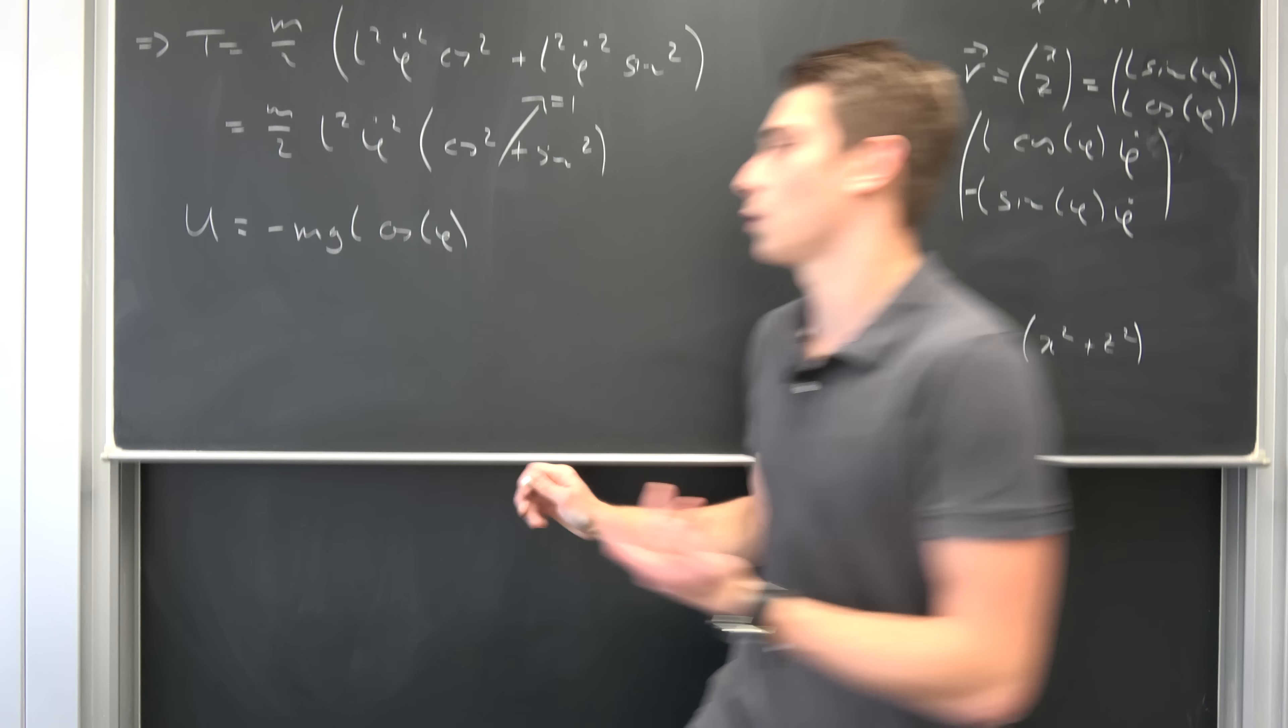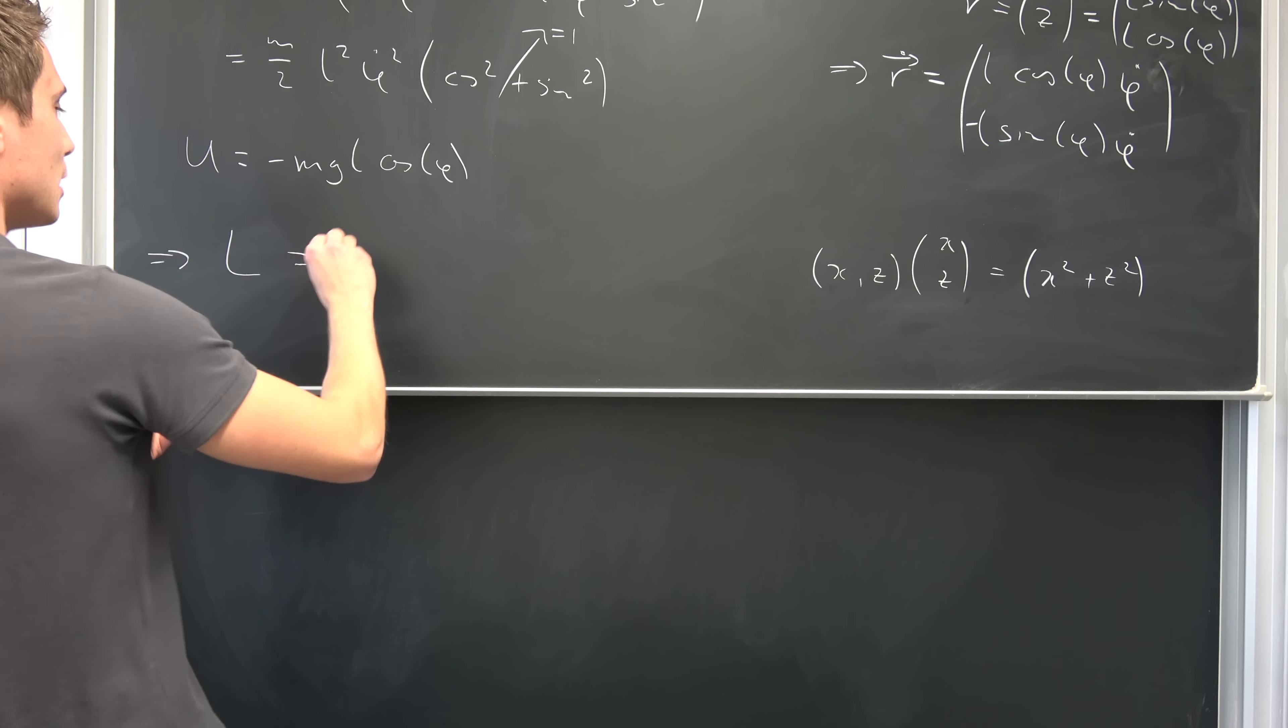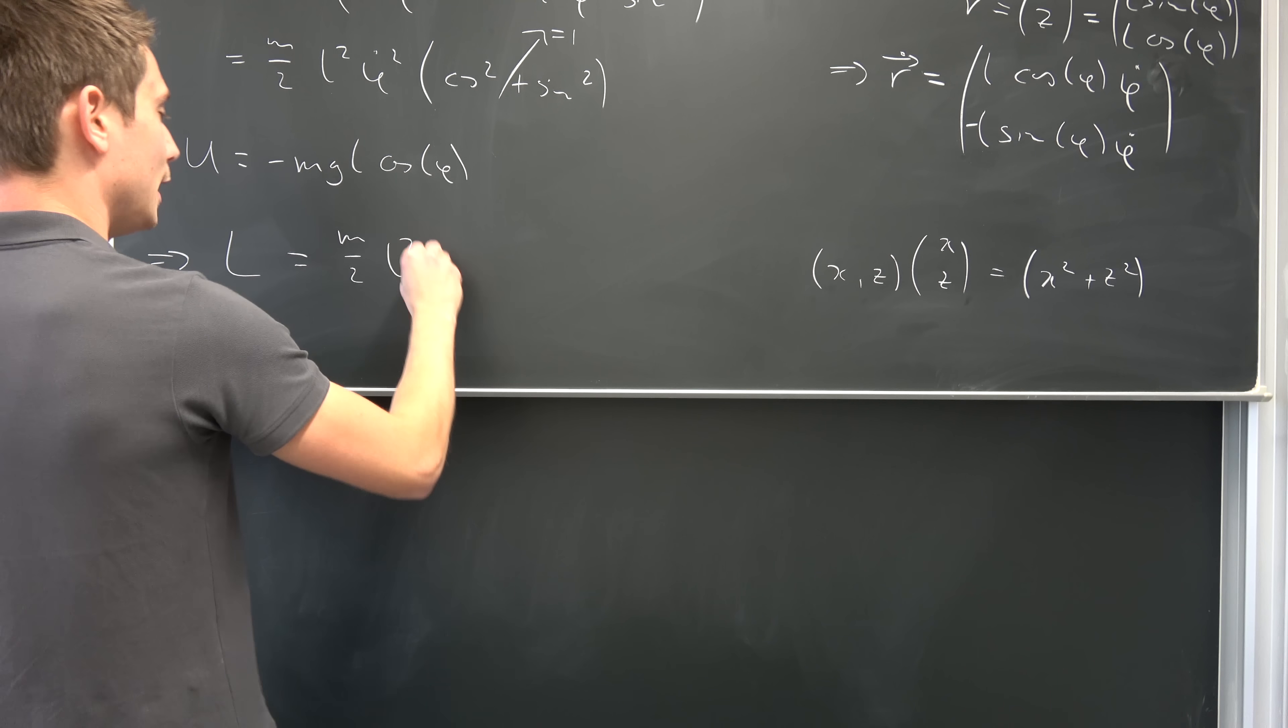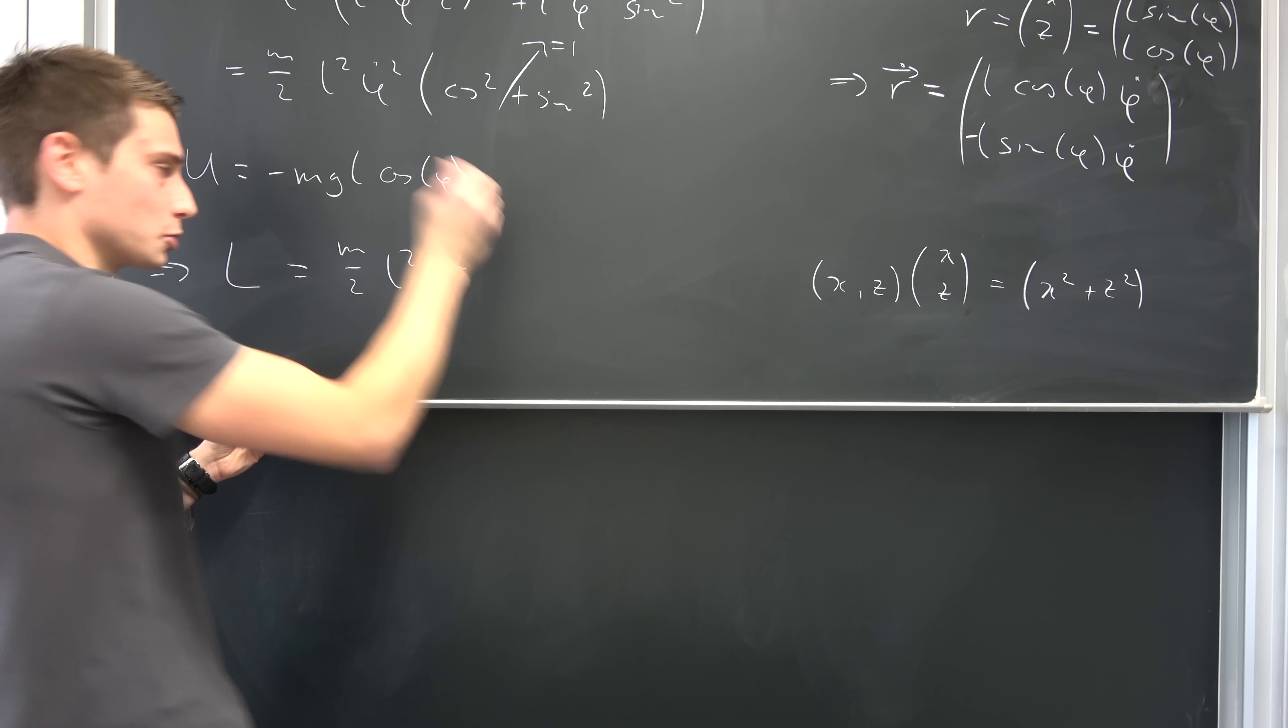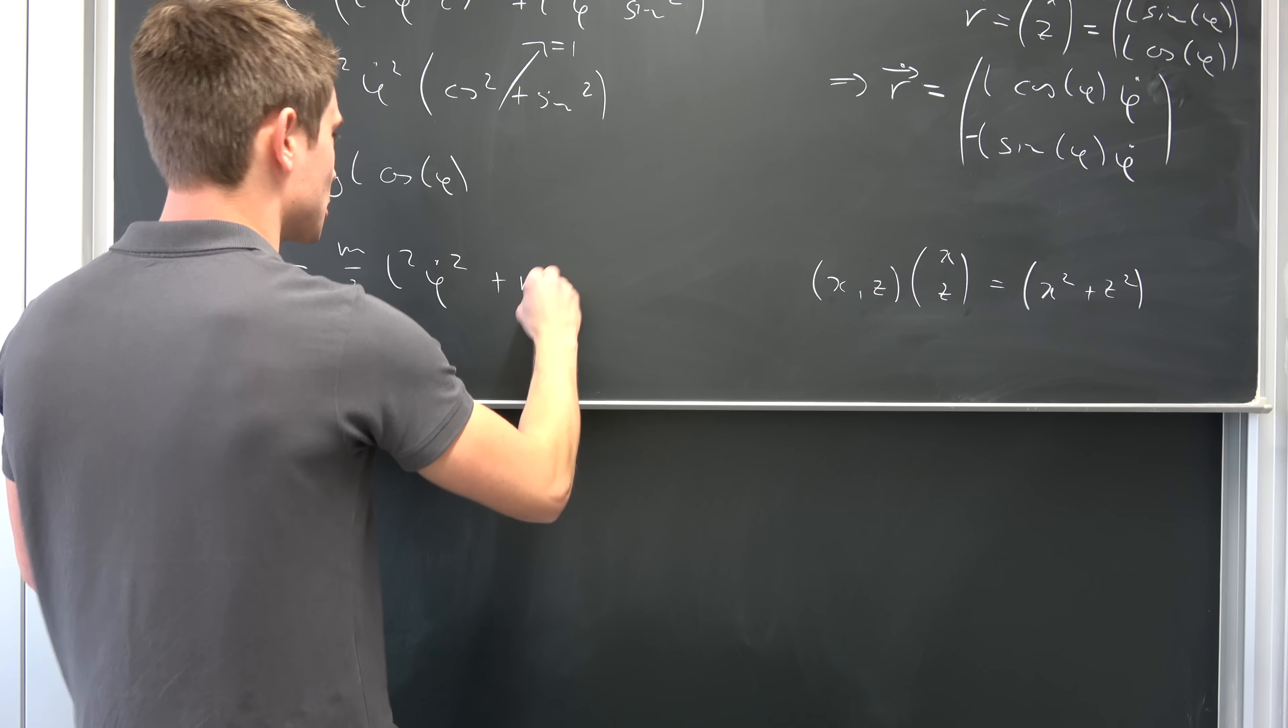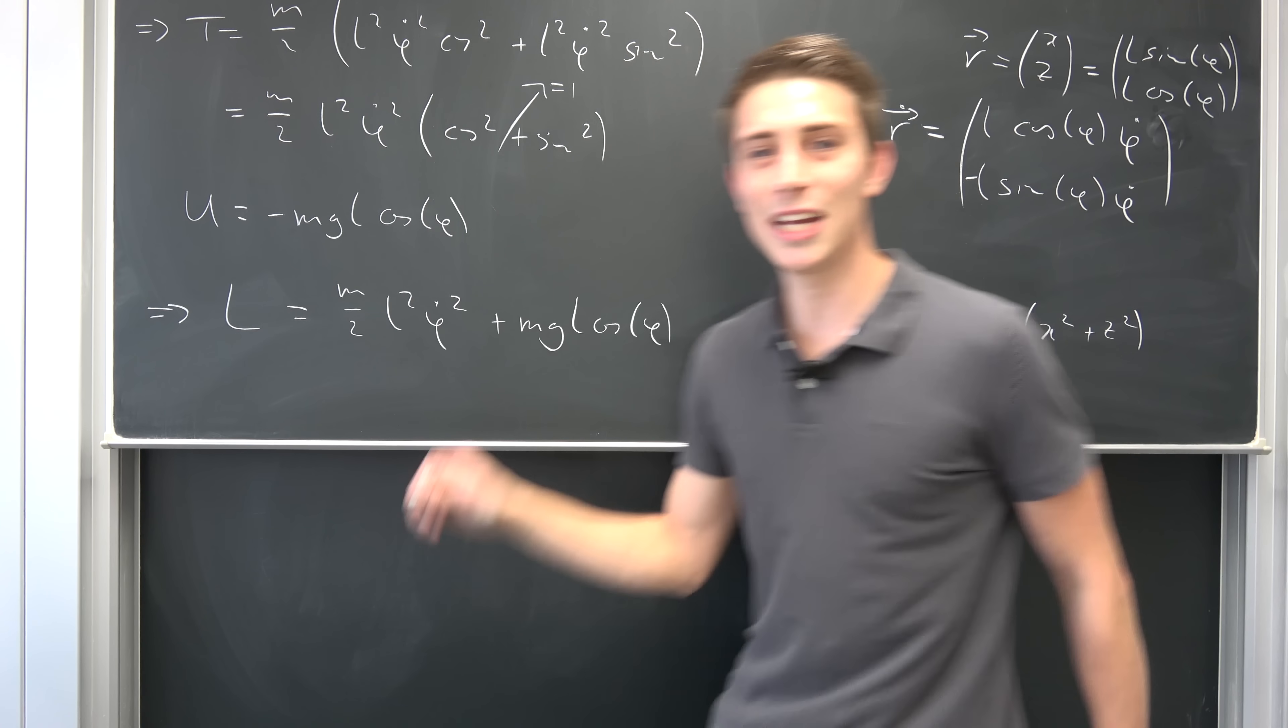Which is nothing but the difference of this and this right here. This is nothing but M over 2 L squared phi dot squared, and then we have negative and negative going to become positive, so positive M times G times L times the cosine of phi. Hey, coolio, that's our Lagrangian.